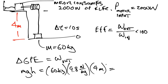60 enter, 9.8 times, 4 times. And we get 2,352. Now, the unit of that is going to be joules. That's a unit of work.